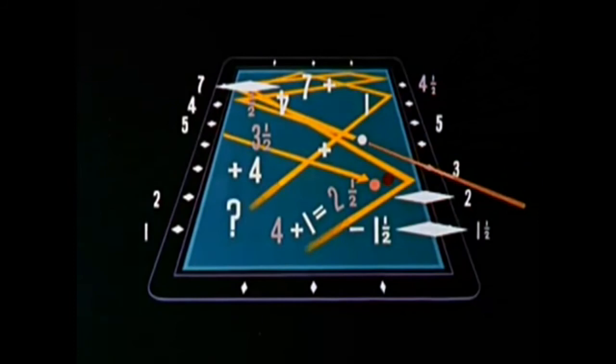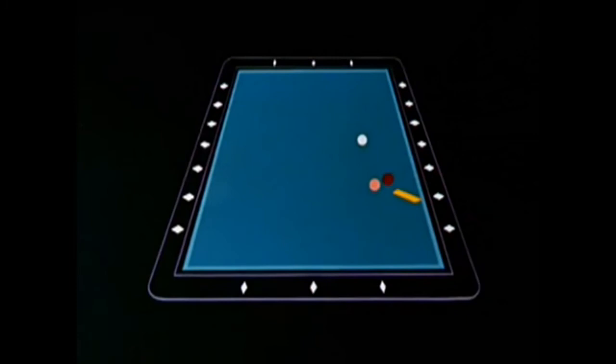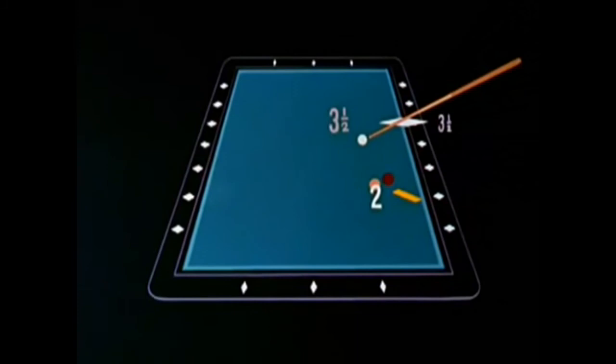No, no, Donald. There's no guesswork to mathematics. It's quite simple. Natural angle for the hit: two. Cue position: three and a half. How much is three and a half minus two? One and a half.